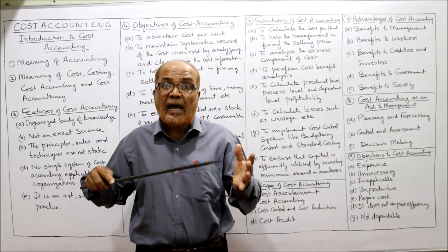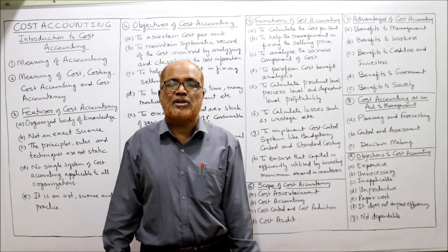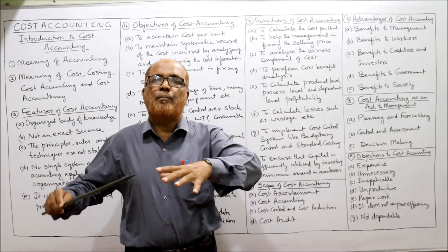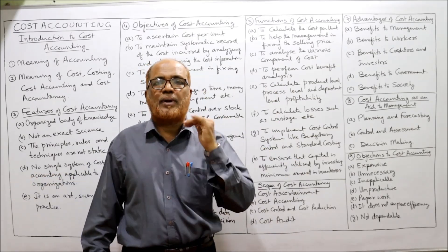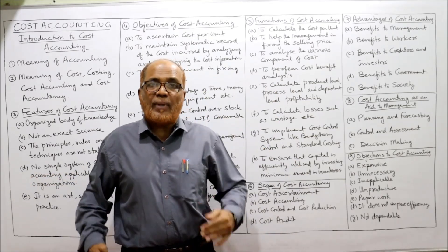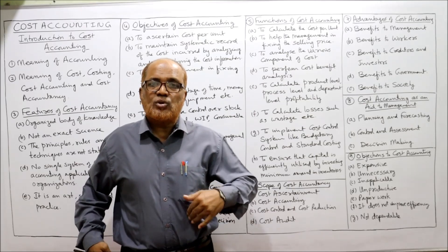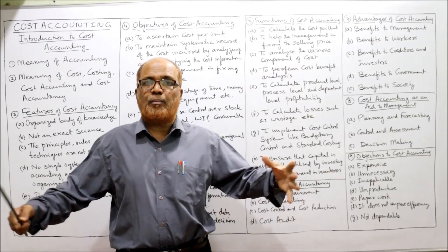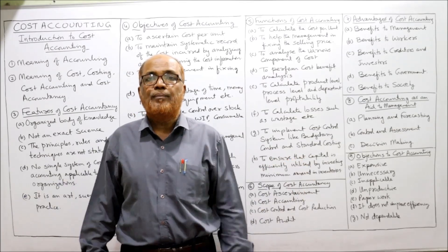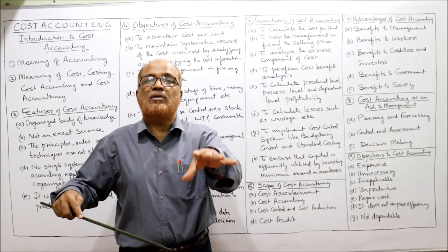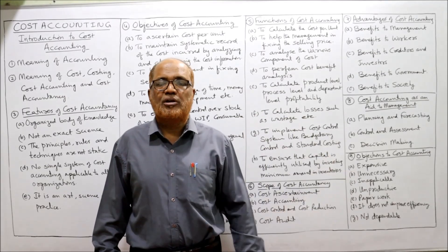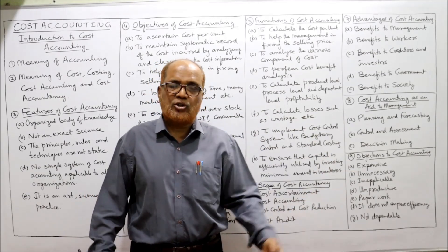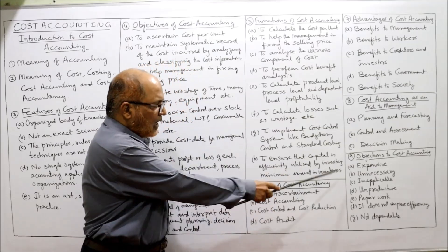Examples of managerial decisions aided by cost accounting include: the make-or-buy decision — whether to make a component or buy it from outside; and pricing decisions — for example, when a customer wants to purchase in bulk at a lower price, management must decide whether to sell at a lower price, and cost accounting helps in taking this decision. There are many such areas where cost accounting is an aid to management.